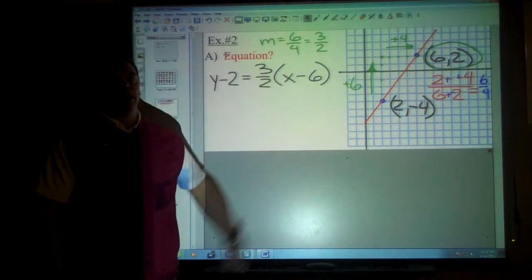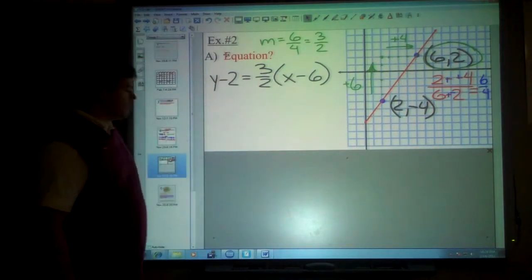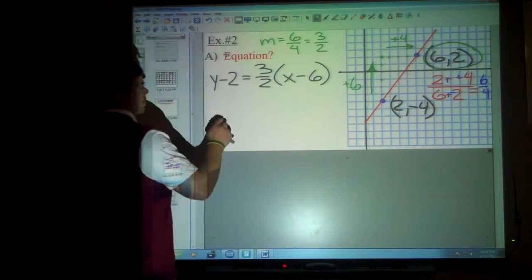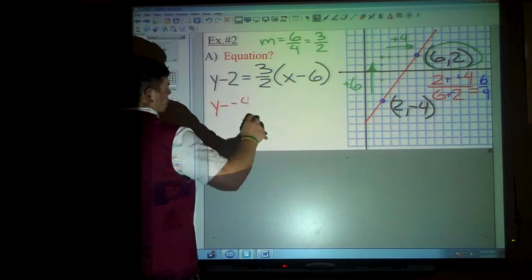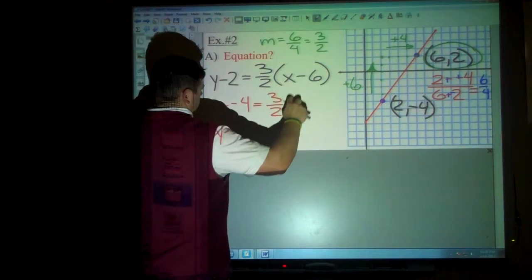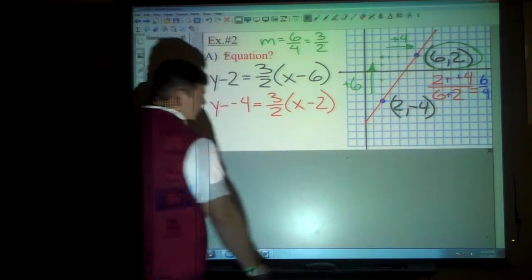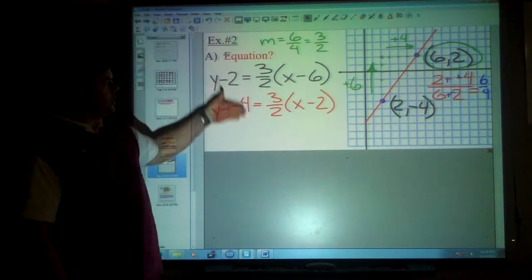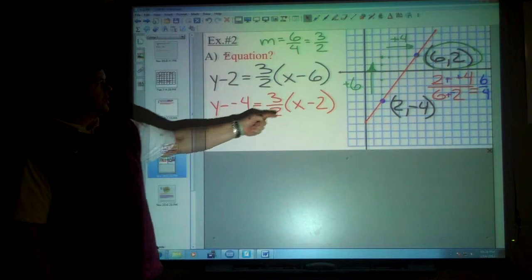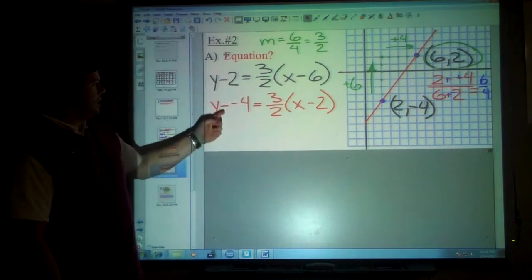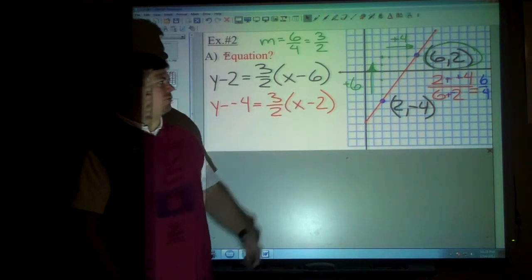There we have it. So if you choose the other equation, it's really not any different. It would just be y minus negative 4 is equal to 3 over 2, x minus 2. So these are both equations you could use. Of course, you could make that plus negative 2 and that plus negative 6. You could make this plus positive 4 and this plus negative 2. It doesn't matter.